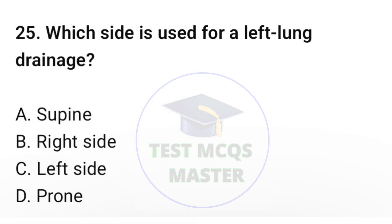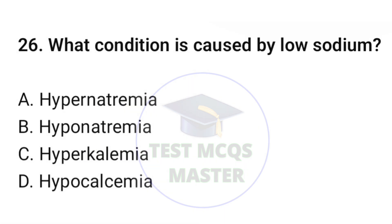Question number twenty-five: Which side is used for left lung drainage? The correct option is B: right side. Question number twenty-six: What condition is caused by low sodium? The correct option is B: hyponatremia.